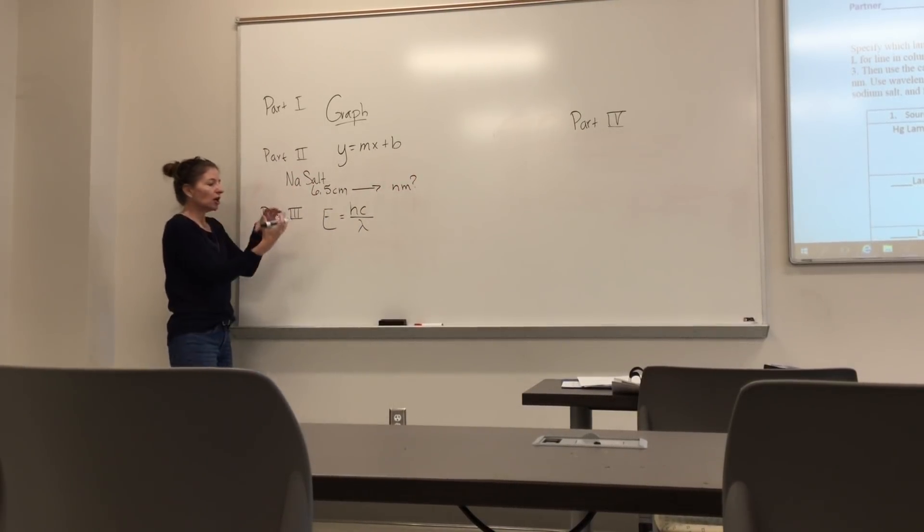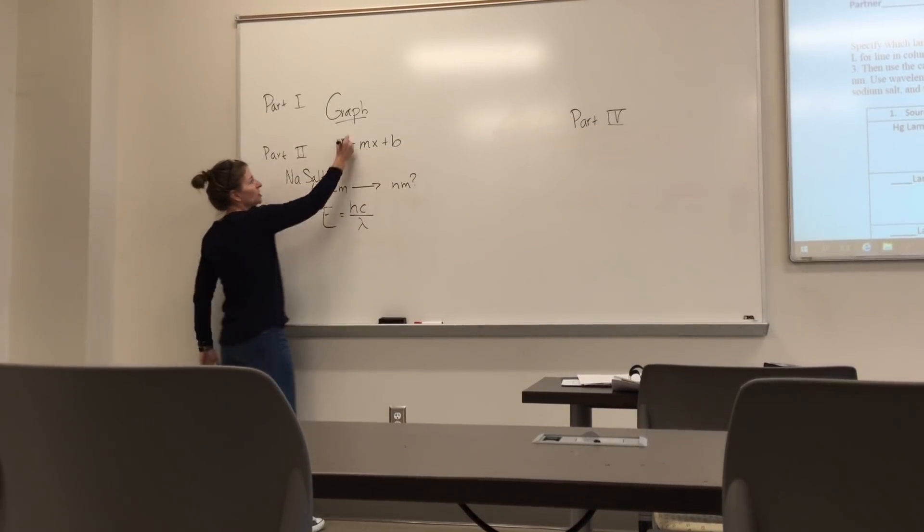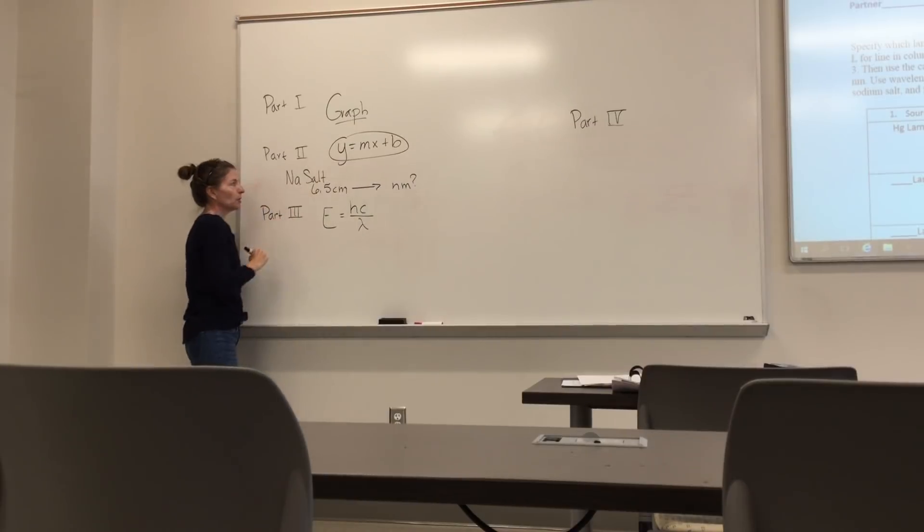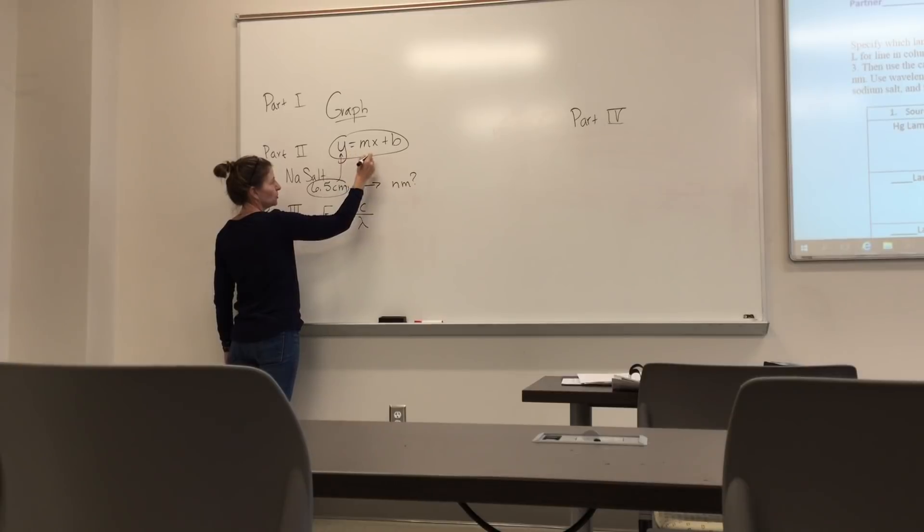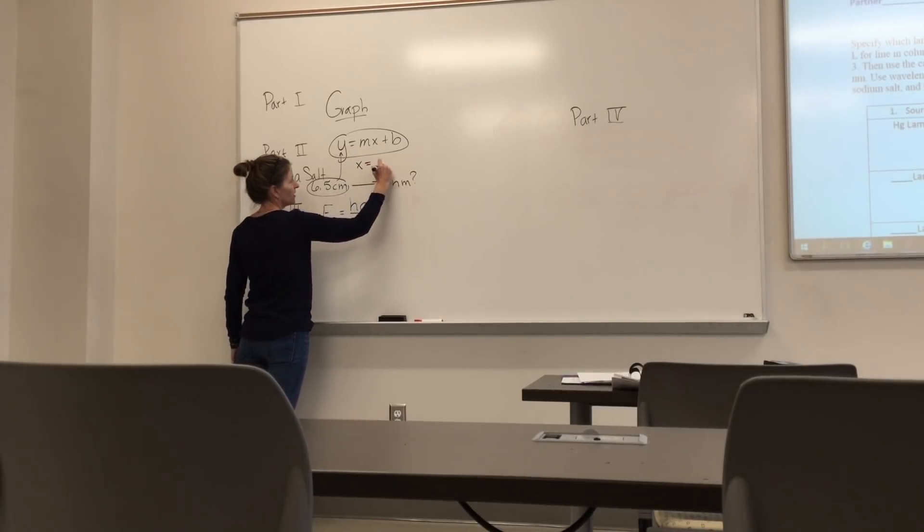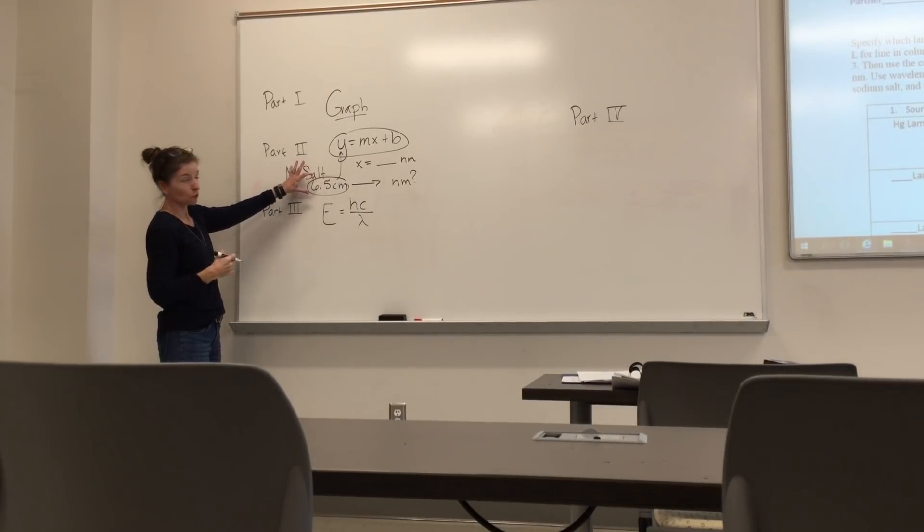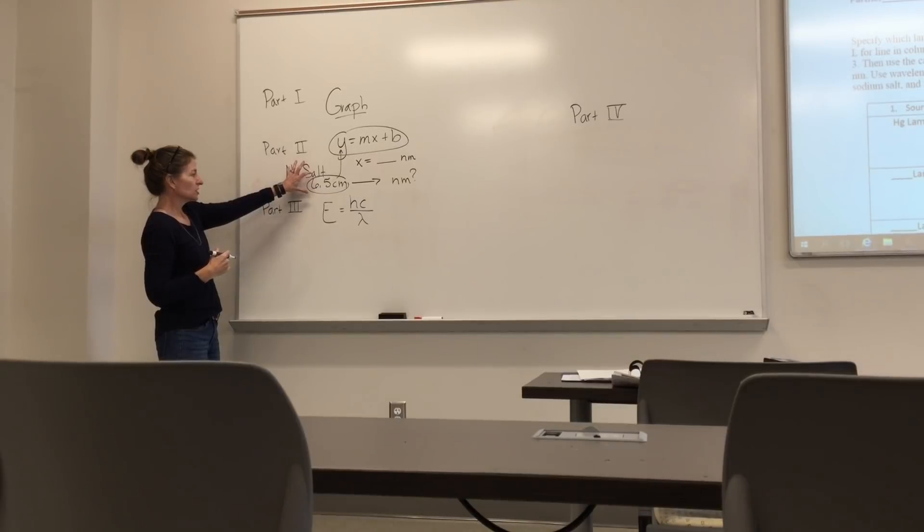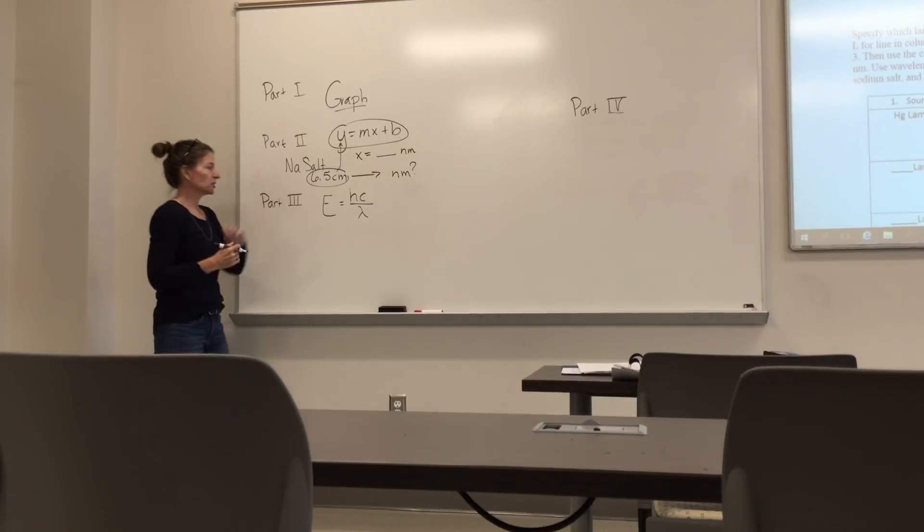So part two is all of that data you collected from the spectra scope in centimeters, you need to then convert to nanometers. You don't just convert it using conversion factors, you use the graph from part one. So here is your y value that you would plug in, and after you plug that in, you'll get an x value and that will be your nanometers. So you use the graph information to get from your 6.5 centimeters or whatever you measured for your salts and for your other lamps. That's part two.